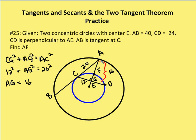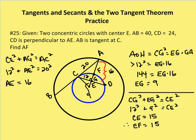So I have AG equal to 16 units. I've solved some other problems here. CG and AC equal to 12 and 20 units respectively. Now I can figure out that my length from G to E — EG — is going to be 9 units.